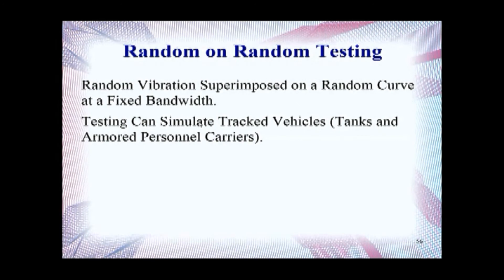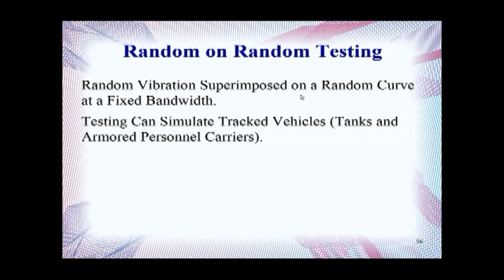What is Random on Random Testing? Random vibration is superimposed on a random curve at a fixed bandwidth. This means you have your base random vibration spectrum, and then at a certain fixed bandwidth, you have random vibration content on top of your base random vibration curve. Testing can simulate tracked vehicles such as tanks and armored personnel carriers. The tracks on the tank generate random on random vibration.